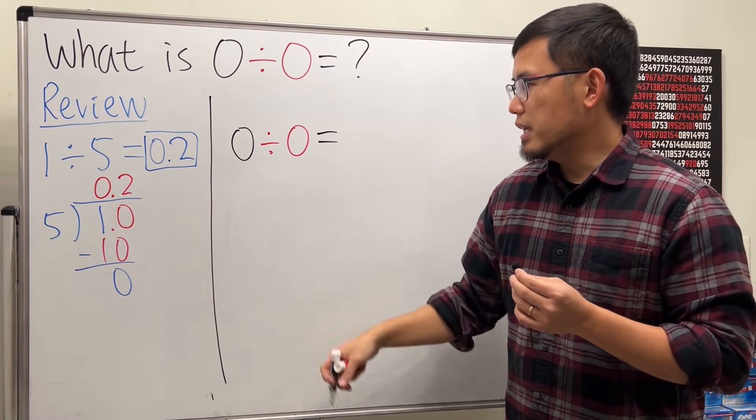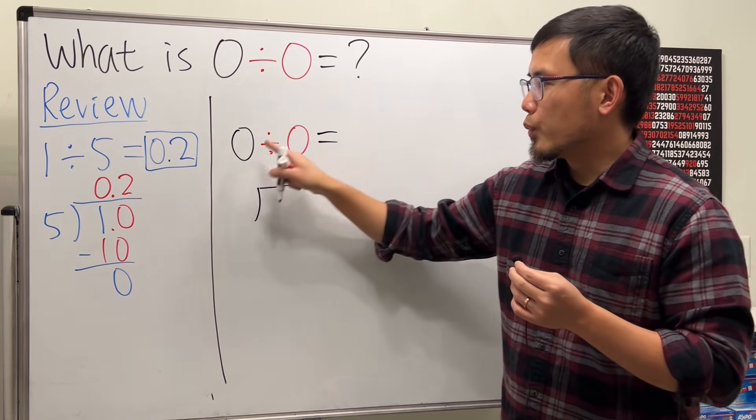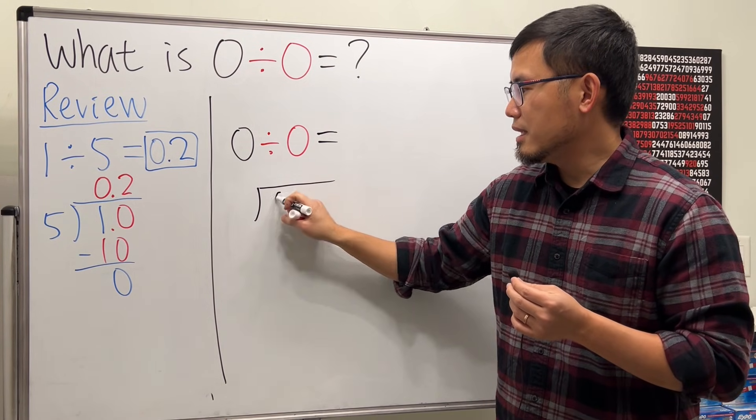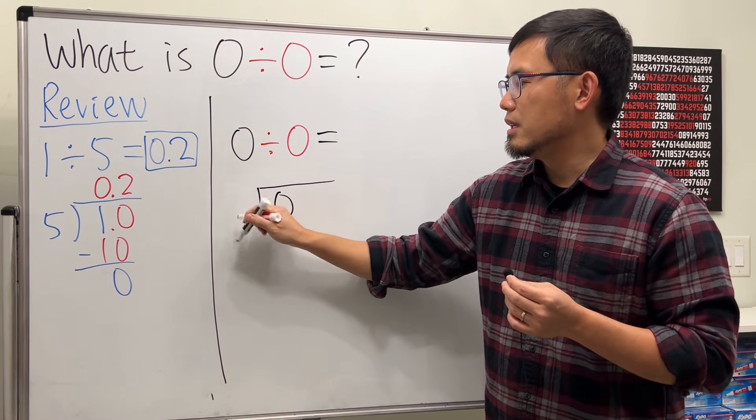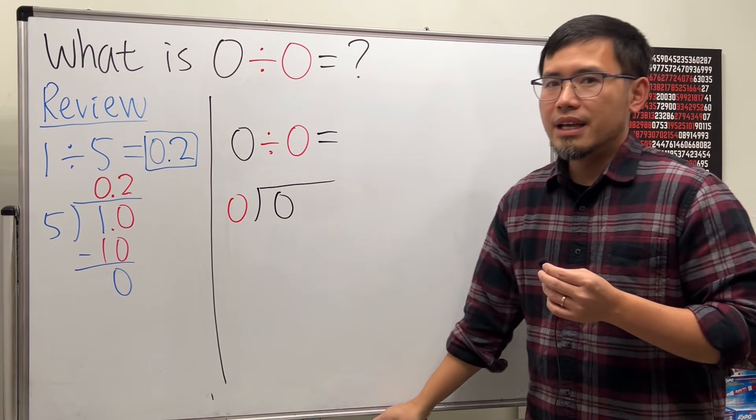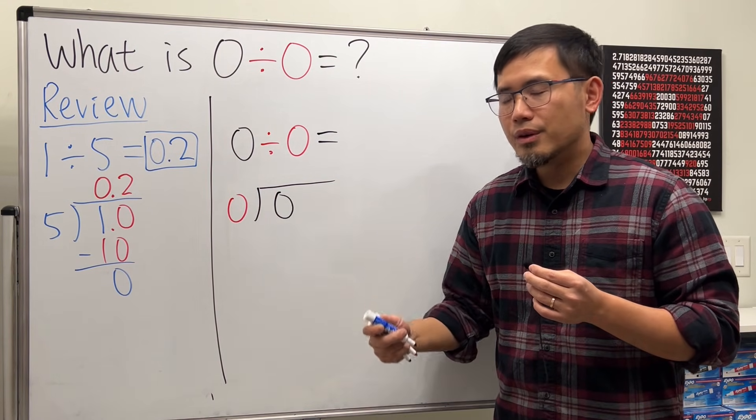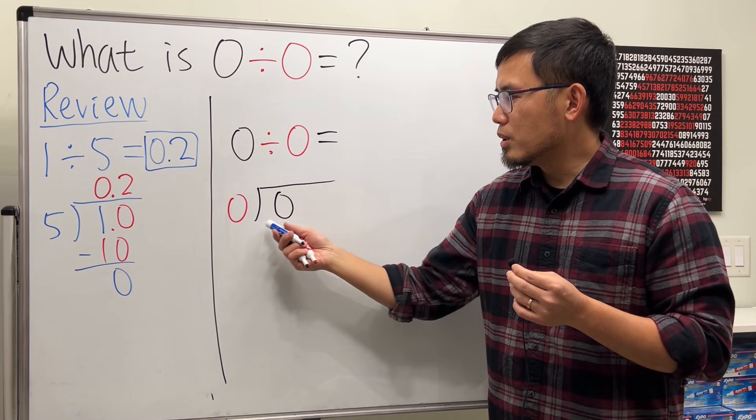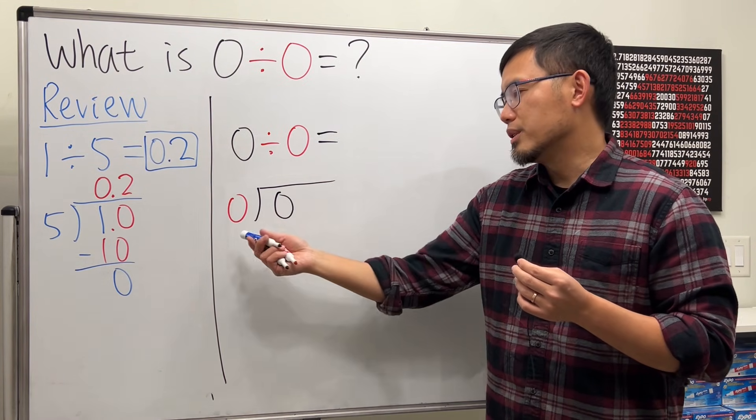Long division again. Here we will put down the first number inside and then the second number on the outside. And then let's ask ourselves: what times zero is equal to zero? Or you can also ask yourself, zero goes into zero how many times?